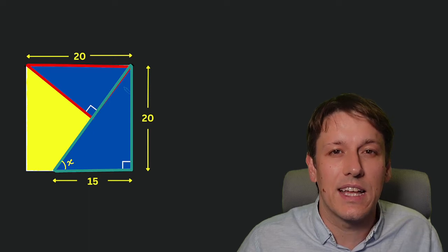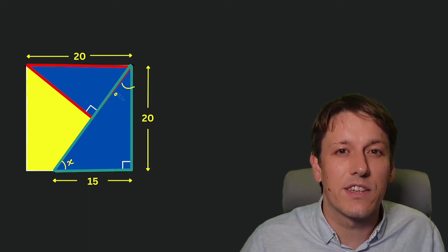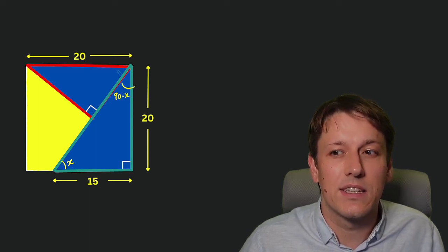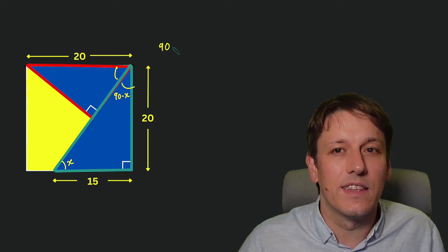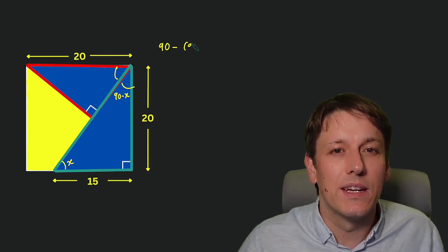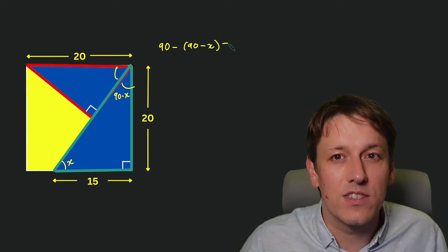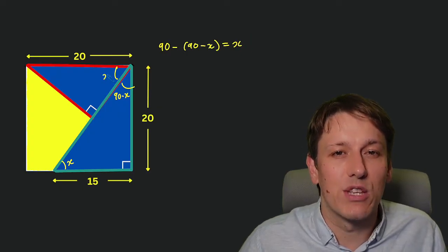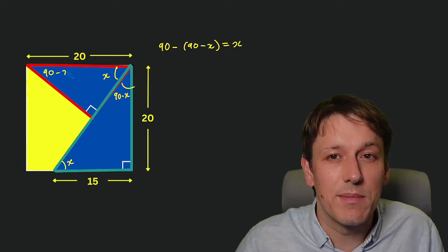So here if we call this angle x in the green triangle, then its other angle will be 90 minus x to complete the 180 degrees in the triangle. Then the top angle in the red triangle here will be 90 minus 90 minus x, which is just x. And so the other angle in the red triangle is 90 minus x, and so they have the same angles and so they're similar.